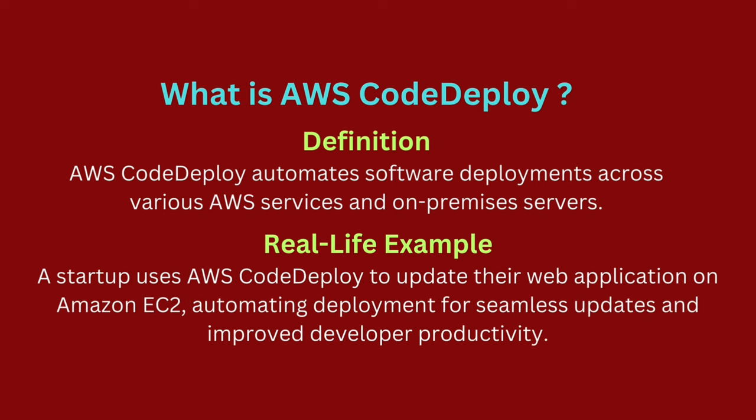For instance, a startup uses AWS CodeDeploy to update their web application hosted on Amazon EC2. When they release a new version, CodeDeploy automates the deployment process, ensuring seamless updates across all services. This automation allows developers to focus on improving the application instead of handling deployment tasks manually.